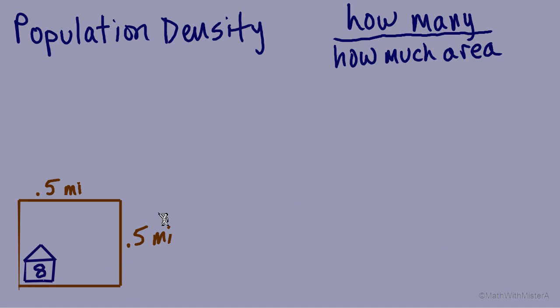To find the population density of this land, first we need to calculate the area of the land. To calculate area of a square or a rectangle, we multiply the two dimensions. Length times width.